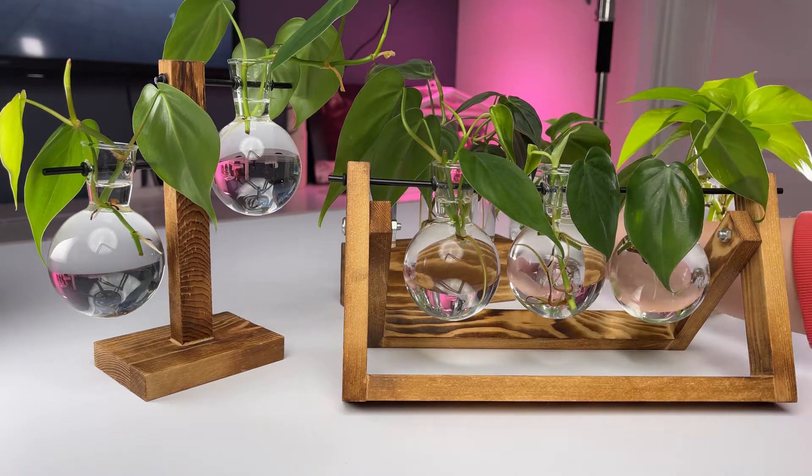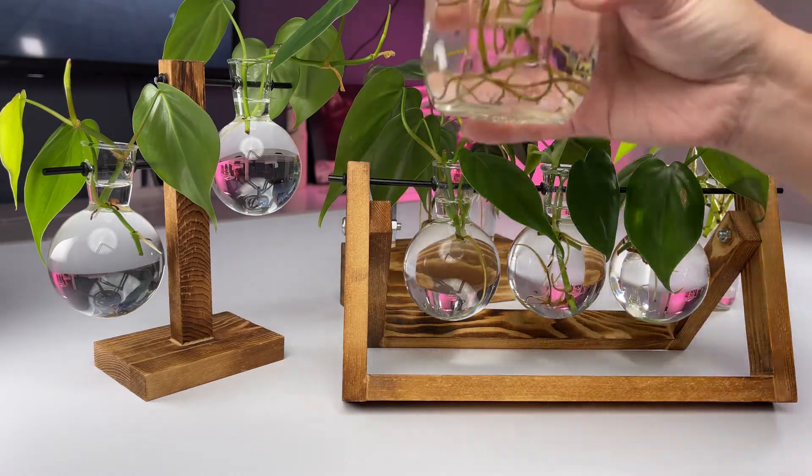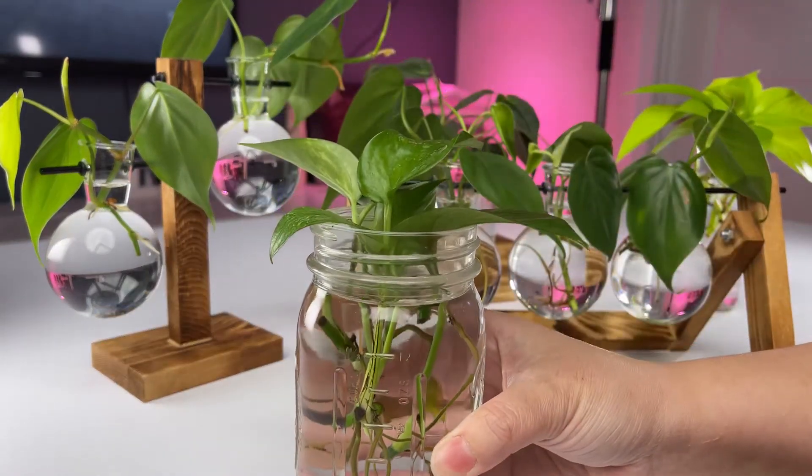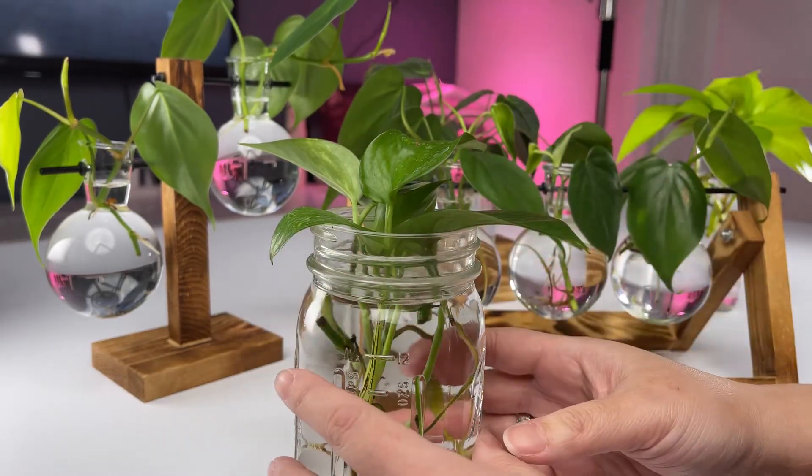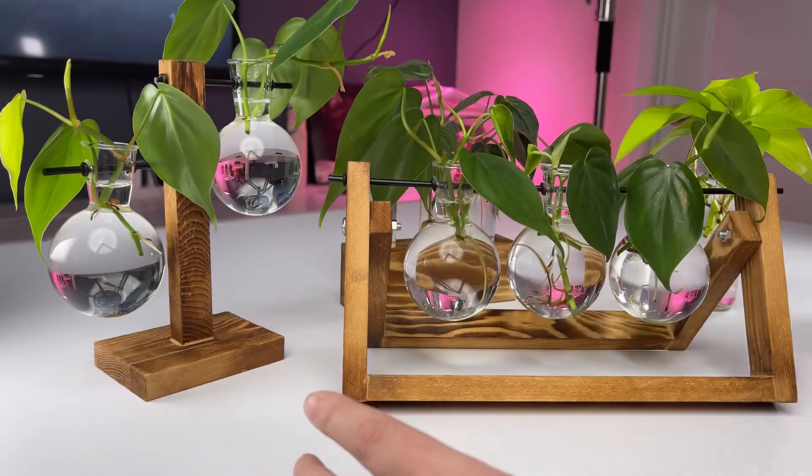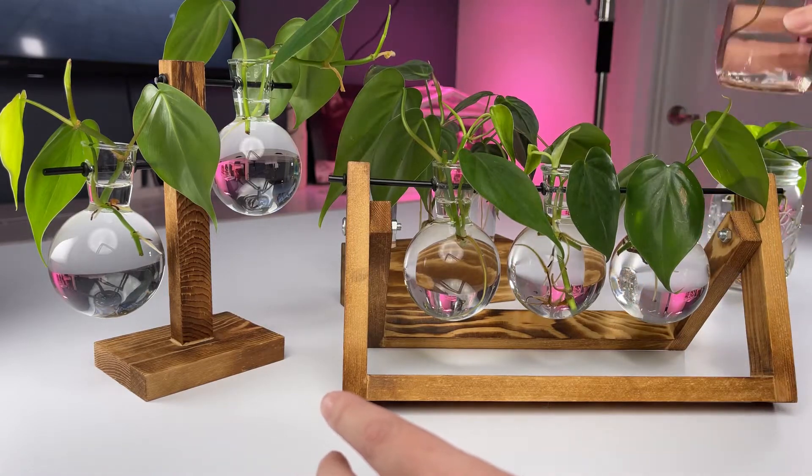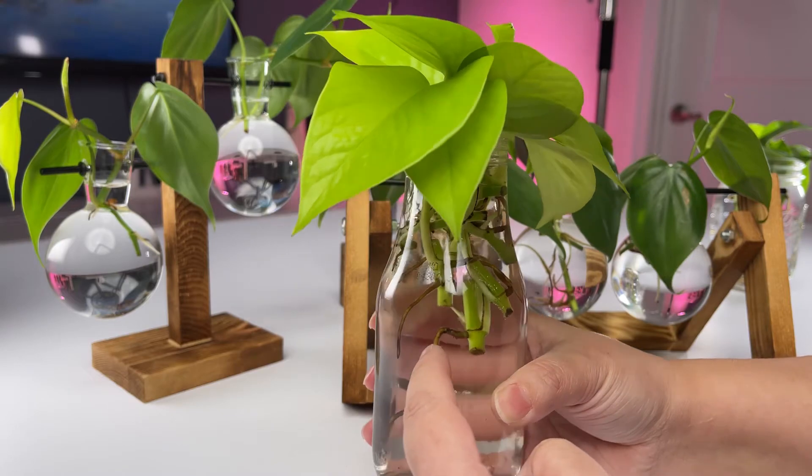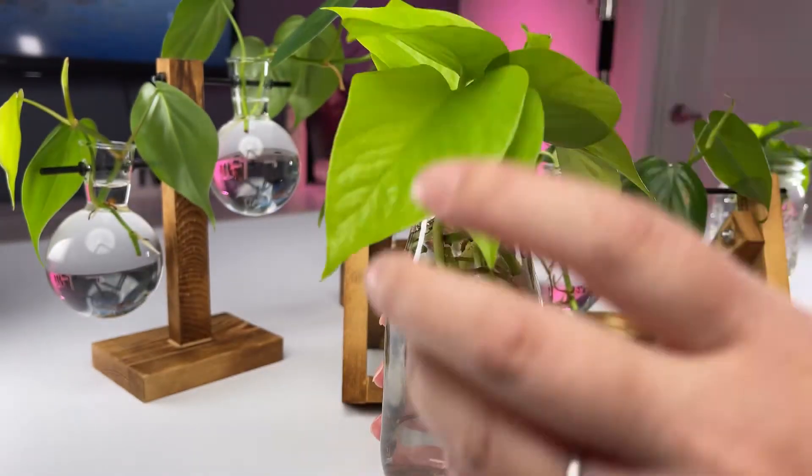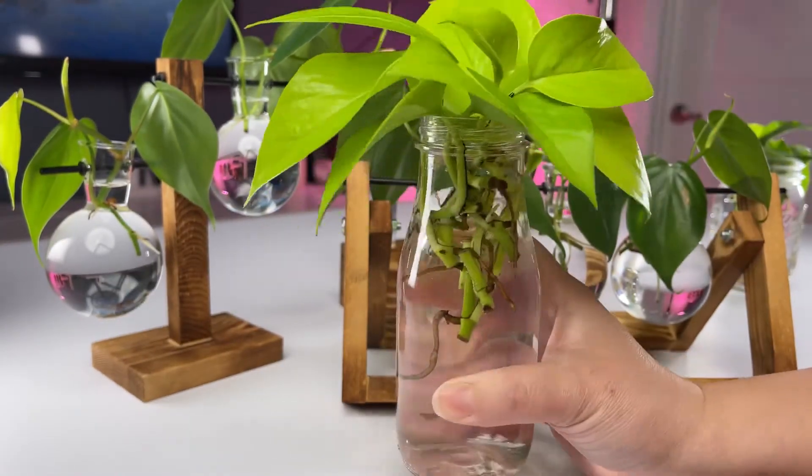Like this where I would put a bunch of cuttings into one jar. And then whenever I would recycle, this is actually a Starbucks frappuccino bottle, I just pull off the label and this is another way that I would propagate.